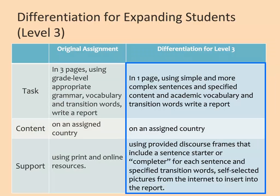Working back to level 3, expanding or intermediate, students must still write a paper independently. It is shorter — just one page — and the expectations for the complexity of the language structures are reduced. However, students still must use academic vocabulary and transition words in their report. The supports at level 3 increase: the sentence starters are at the sentence level, where at level 4 they were at the paragraph level. The sentence frames also include the appropriate transition words, and the students still self-select pictures from the internet.